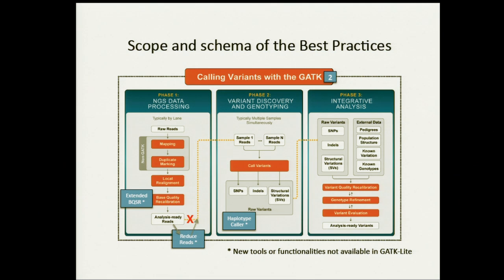You're going to see this pipeline diagram so many times during the workshop that by the end of today, and certainly by tomorrow, you will know how to draw it yourself. This diagram is the pipeline we use when we say best practices. As Eric mentioned, we have three phases. Phase one is data processing. Phase two is variant discovery and genotyping. Phase three is the processing and evaluation of the call set. Phase one starts with raw data coming out of the sequencer and ends with analysis-ready reads.